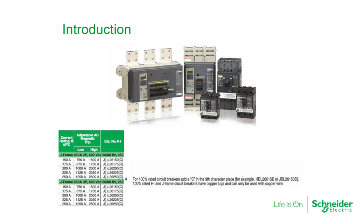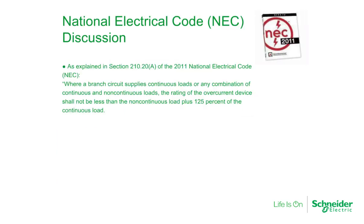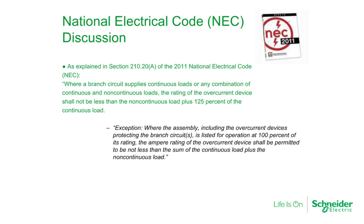Let's discuss how the NEC and UL set the rules about 100% and 80% ratings. According to the 2011 National Electrical Code, the rating of the overcurrent device shall not be less than the non-continuous load plus 125% of the continuous load. There is an exception that allows for 100% rated breakers to be used in equipment tested and listed for 100% rating, which has led to the phrases 100% rated breakers and 80% rated breakers.